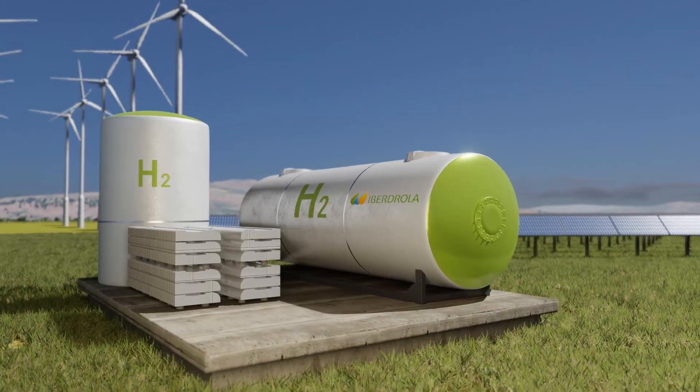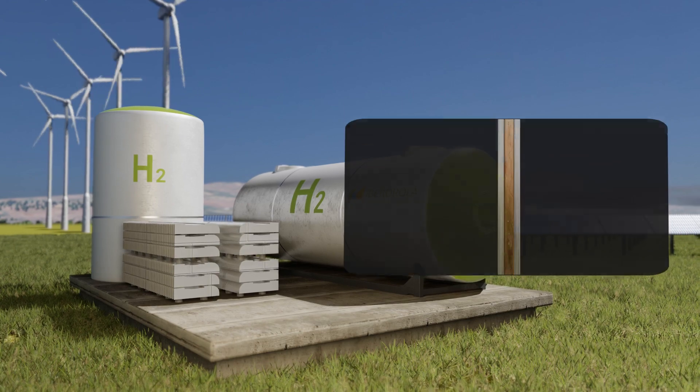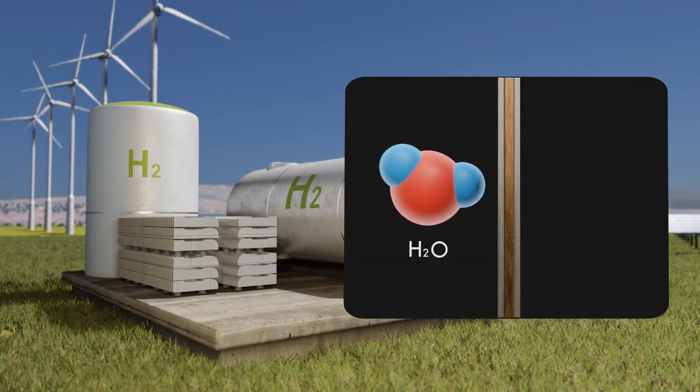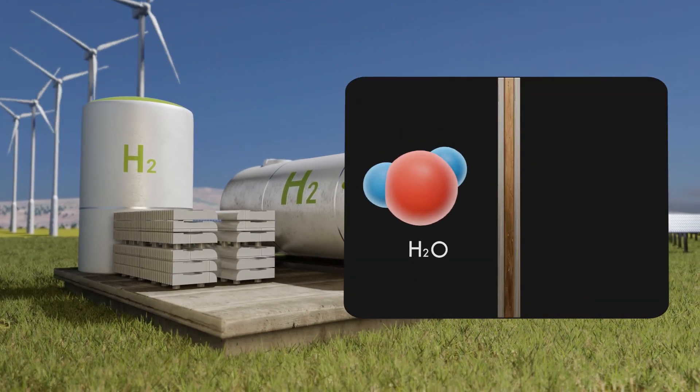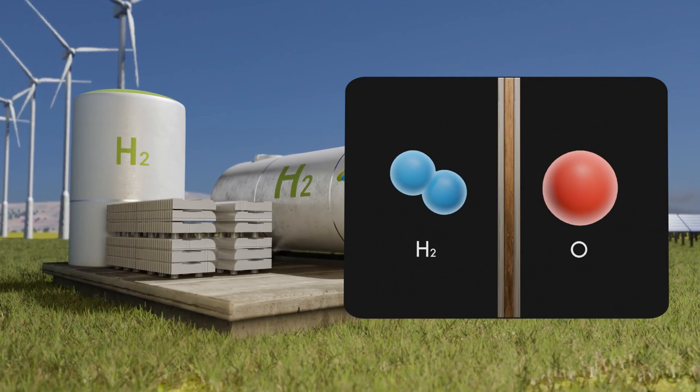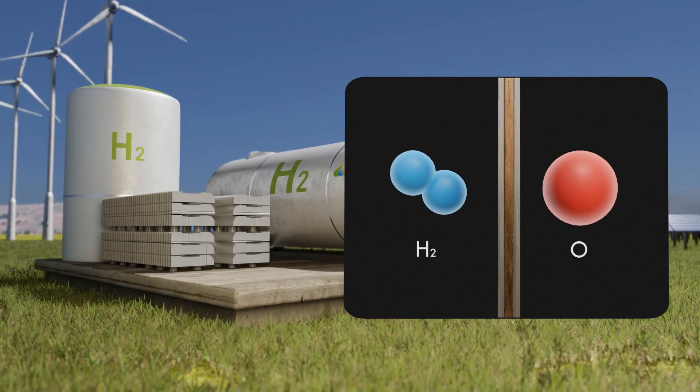A chemical process known as electrolysis is used to separate the hydrogen from the oxygen contained in water, with the energy used for doing so coming from renewable sources, meaning that no carbon dioxide is emitted into the atmosphere.